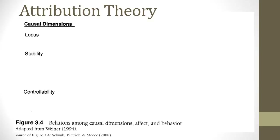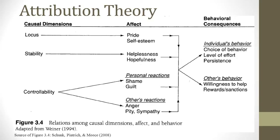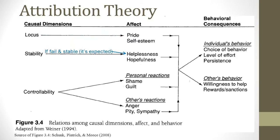These causal dimensions are important because they lead to different emotions. If you succeed and attribute it to an internal cause, it's likely to increase your feelings of pride and self-esteem. Conversely, if you fail and attribute it to an internal cause, that can decrease your pride and self-esteem. Stability is related to your expectancy for success. If you fail and attribute it to something stable, you'll feel helpless because you'll expect to fail again. However, if you fail and attribute it to an unstable cause, you may feel hopeful that you can succeed in the future.